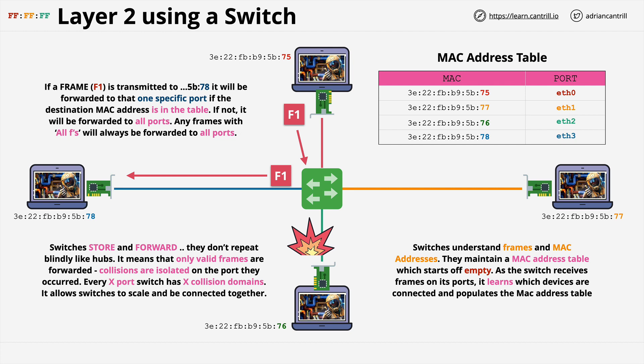Layer two is the foundation for all networks you use day to day. It's how your wired networks work, how Wi-Fi networks work, and how the internet works — which is basically a huge collection of interconnected layer two networks. The name 'internet' stands for an inter-network of networks. These networks are layer two networks all connected together to form the internet.